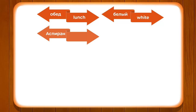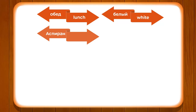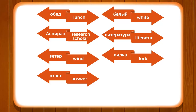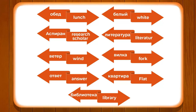Let's look at some important words used in day-to-day communication. OBED means lunch, BELY means white, ASPIRANT means research scholar, LITERATURA means literature, VECHER means evening, VILKA means fork, OTVET means answer, KVARTIRA means flat, and BIBLIOTEKA means library. Some words like BIBLIOTEKA, UNIVERSITET, ASPIRANT, KLASS, UROK, AUDITORIYA, SHKOLA, RUCHKA, KARANDASH, BUMAGA, PORTFEL are all useful if talking about school or university.